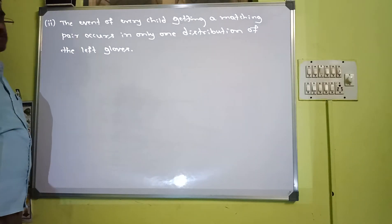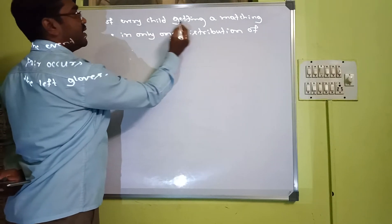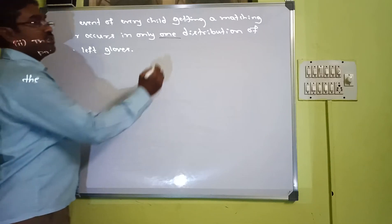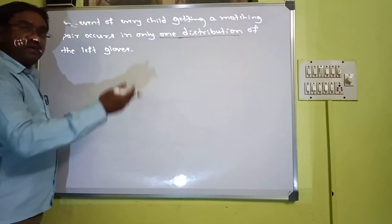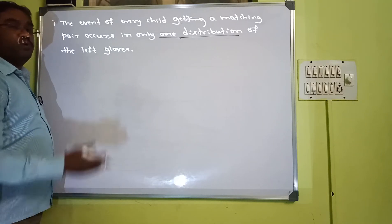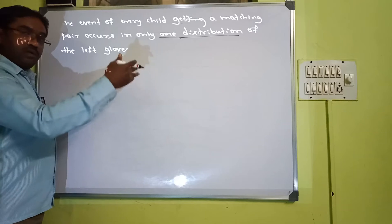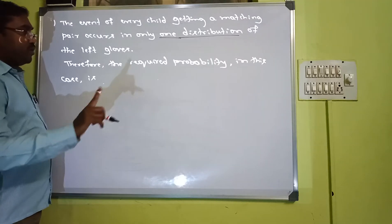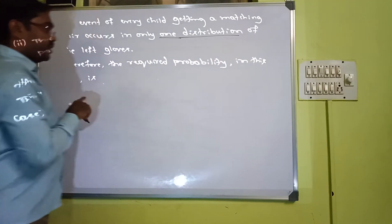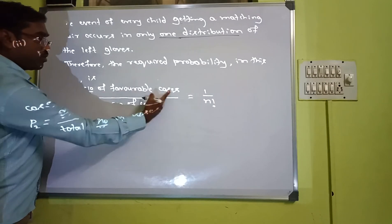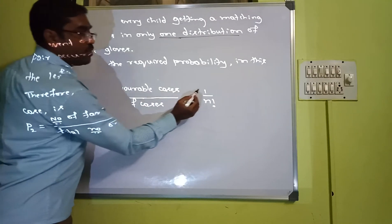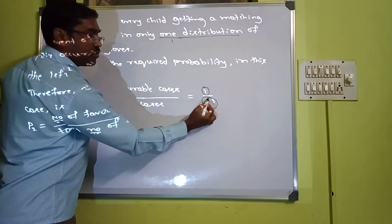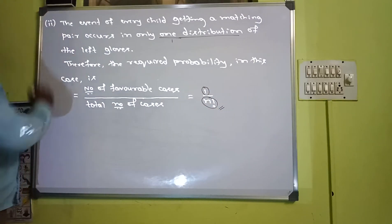Sub-question 2: Find the probability that every child gets a matching pair. Since each pair has a different color, there is only one way to distribute the left gloves so every child gets the matching color. Favorable cases = 1; total cases = n factorial. Therefore the required probability is 1 / n!.